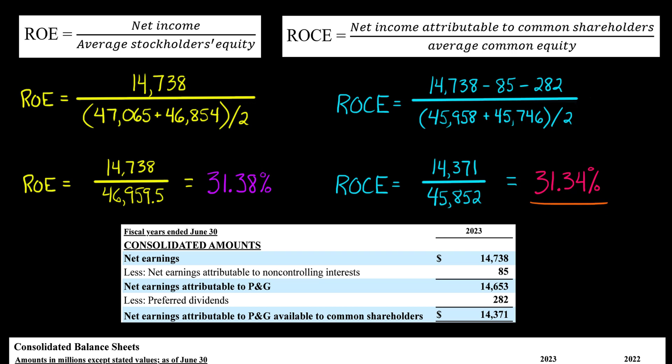If you had a hypothetical situation where the company had no non-controlling interest and no preferred stock, then the return on equity and the return on common equity would actually be the same, because we wouldn't need to make these adjustments.